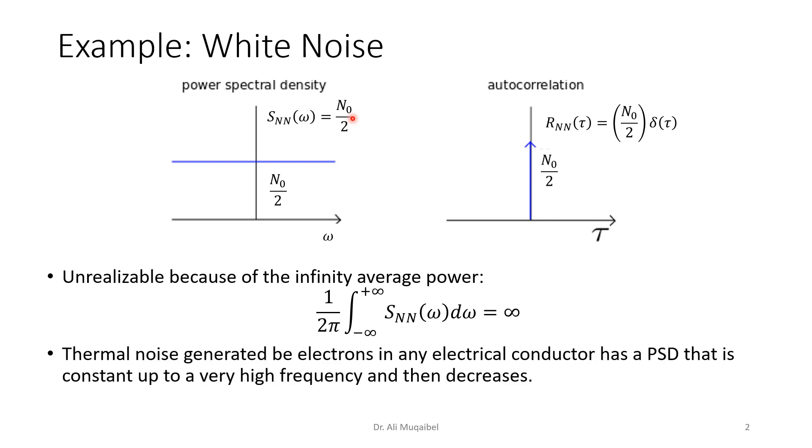Thermal noise generated by electrons in electrical circuits and conductors has a power spectral density that is constant up to a very high frequency. That's why we can approximate it with white noise, as we're going to see in the next slide.